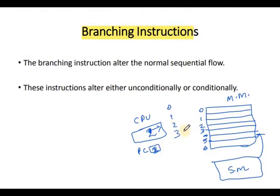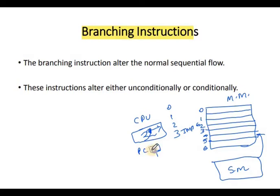Suppose the 3rd instruction is executed in such a way that the flow jumps elsewhere — these instructions are called branching instructions. These instructions alter the flow either unconditionally or conditionally, which is what we will discuss.